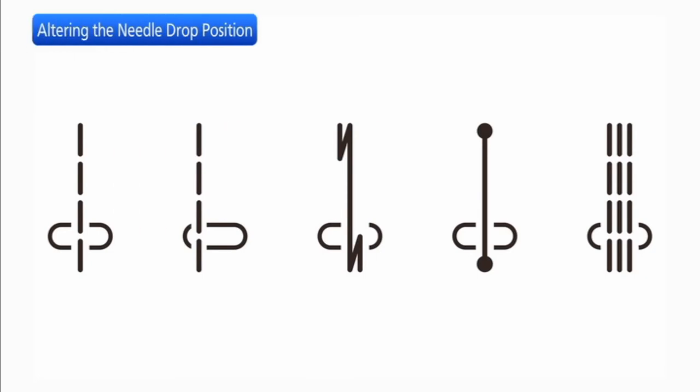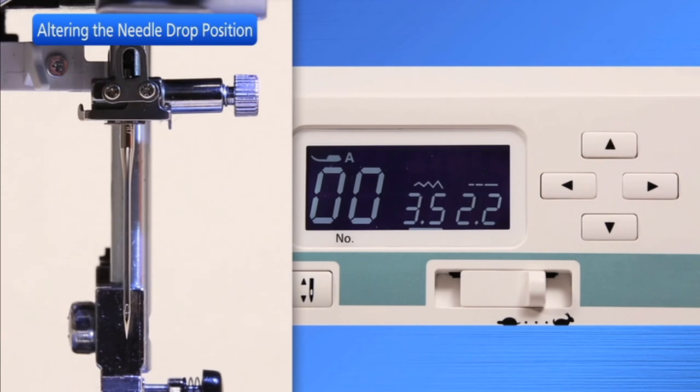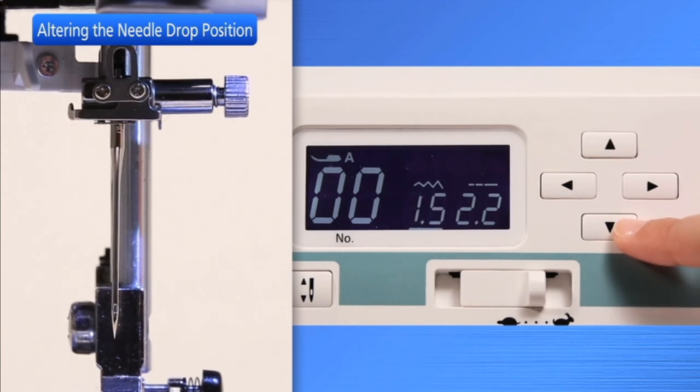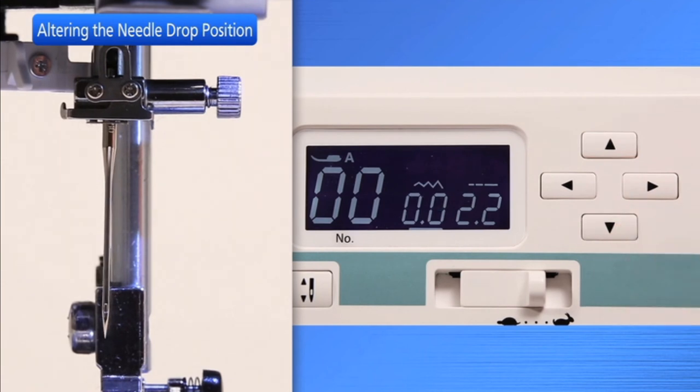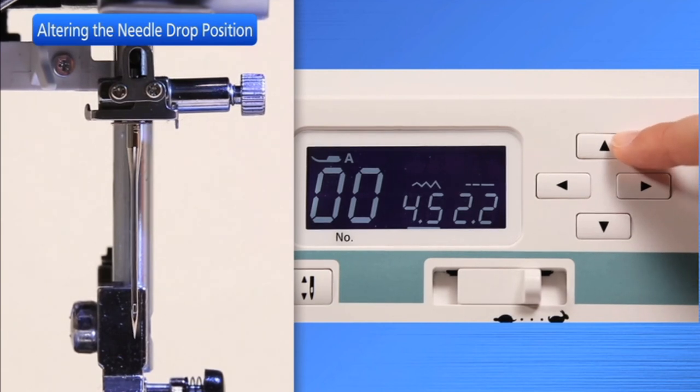The needle drop position can be adjusted for straight stitch patterns. Press the cursor buttons to move the cursor under the stitch width. Press the down button to move the needle to the left. Press the up button to move the needle to the right.